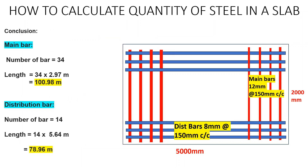In conclusion, for a slab of 500 mm by 2000 mm: the main bars (12 mm diameter) number 34, each 2.97 meters long, giving a total length of 100.98 meters. The distribution bars (8 mm diameter) number 14, each 5.64 meters long, giving a total length of 78.96 meters. That is how you calculate the quantity of steel in a slab.